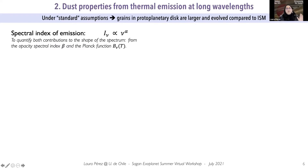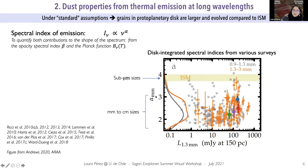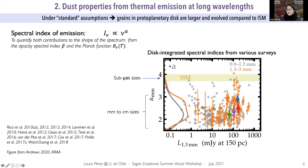Another important aspect — example number two — is that you can obtain dust properties. You can infer from the spectral index of emission the properties of the dust grains, including the fact that grains appear larger and more evolved compared to the ISM. When you look at the spectral index of emission from a large number of disks, the interstellar medium — mostly composed of very small dust grains — has spectral indices that are quite large. When you look at protoplanetary disks, you see lower spectral index values and thus larger grain sizes.